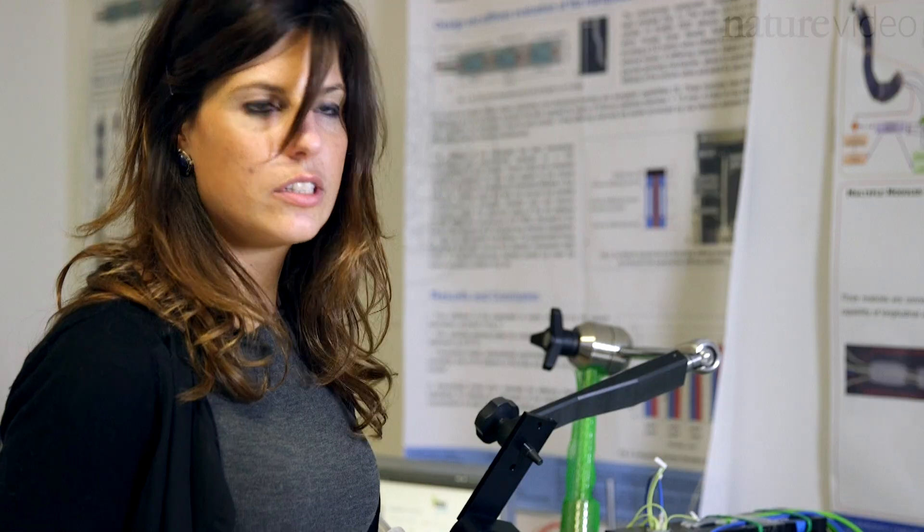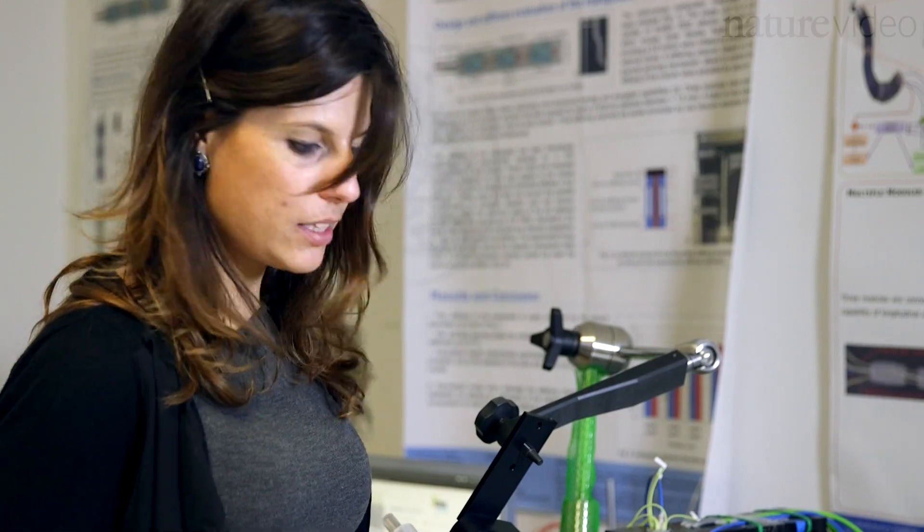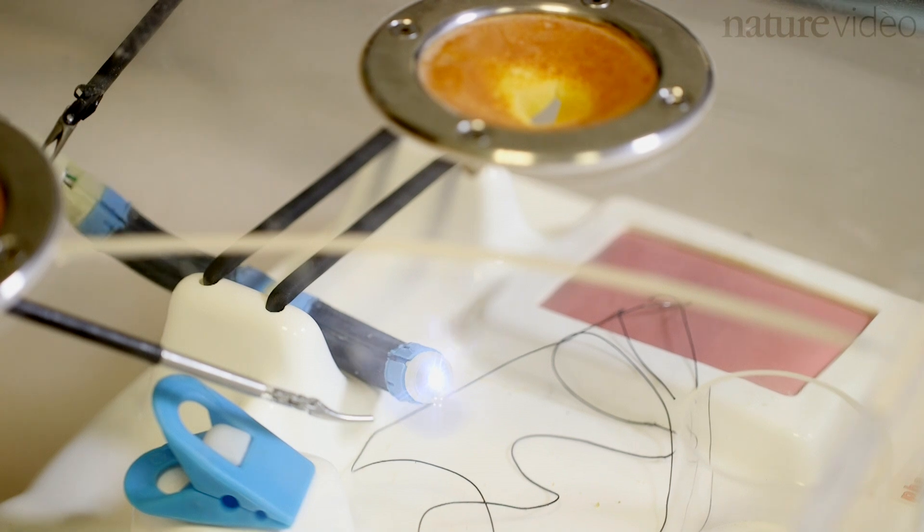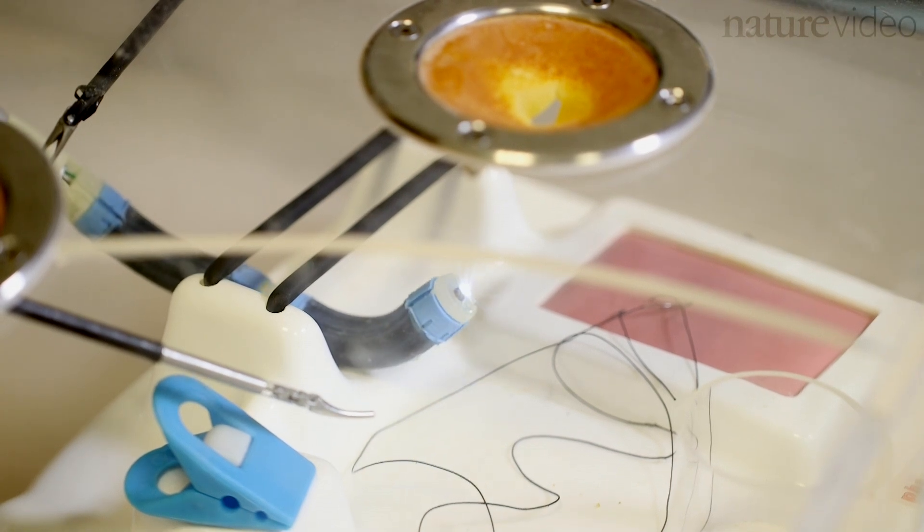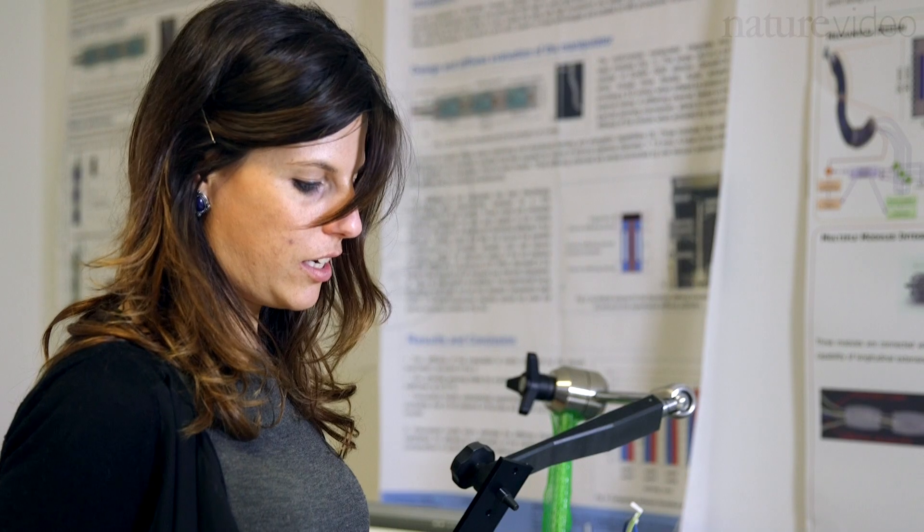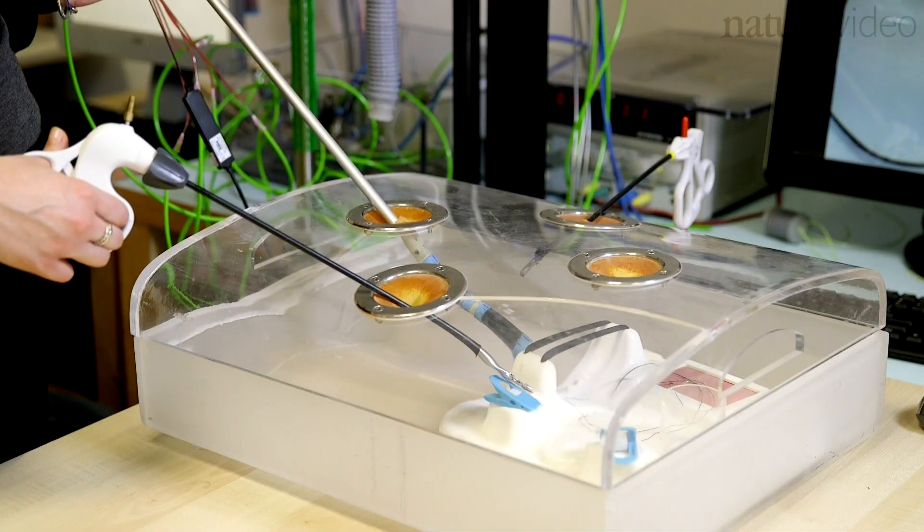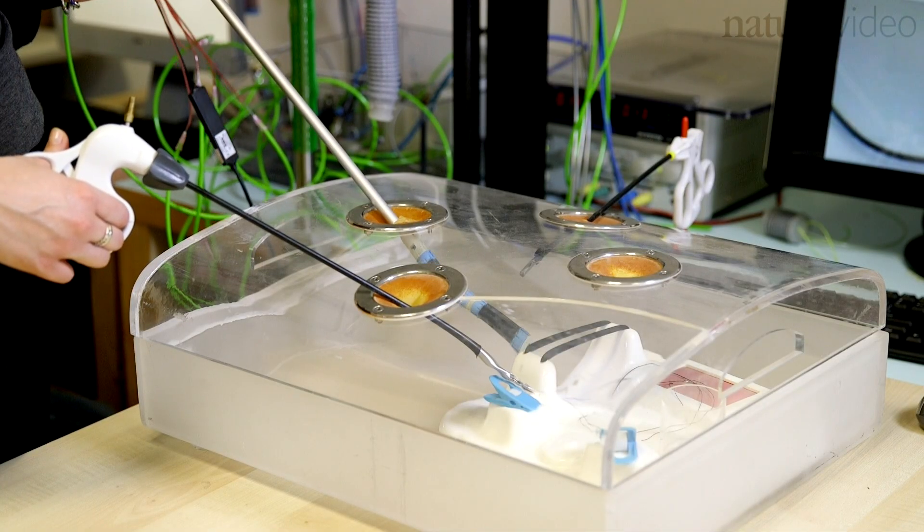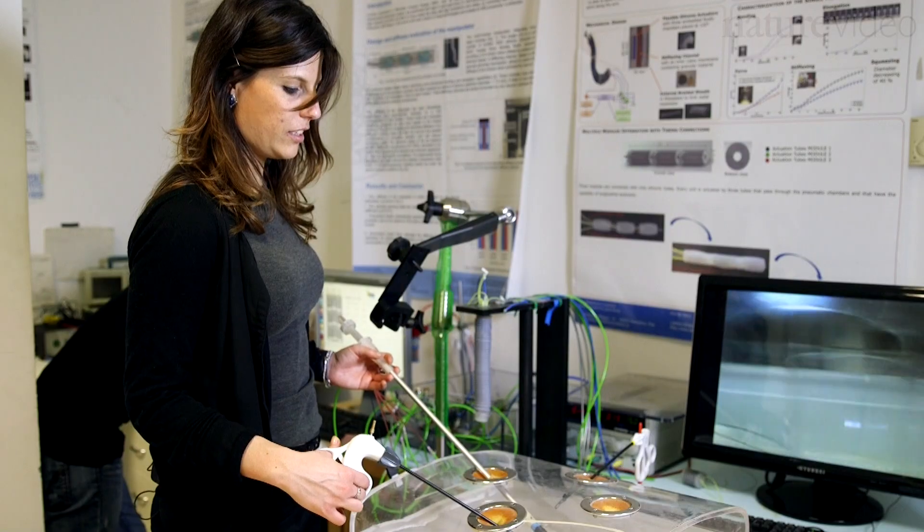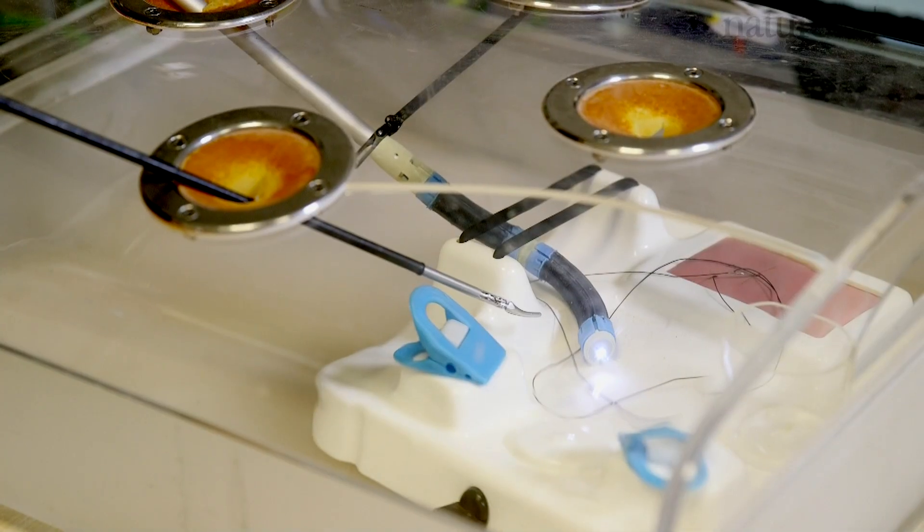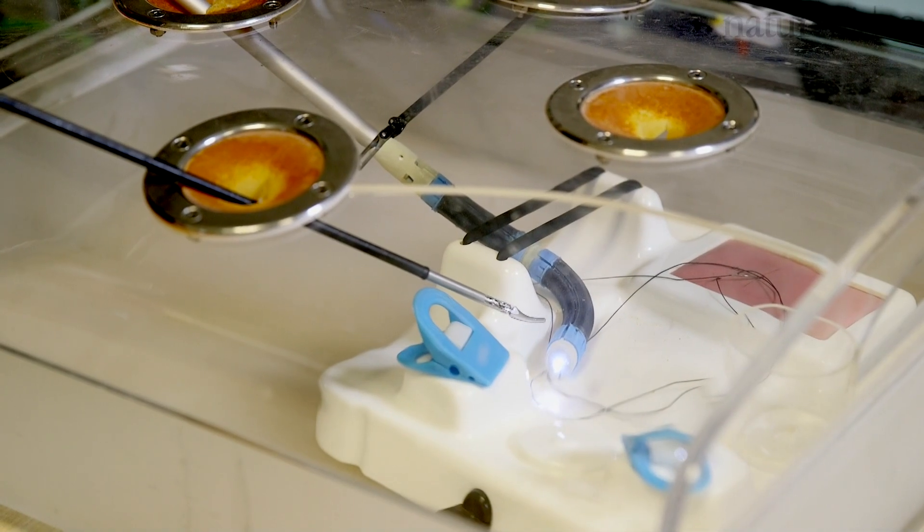Now we see a manipulator which is made up of two segments which can steer in all the direction and also elongate. This is a standard training box for training surgeons. Surgeons tried this system and they actually perform a surgical operation using the view from the soft robot.